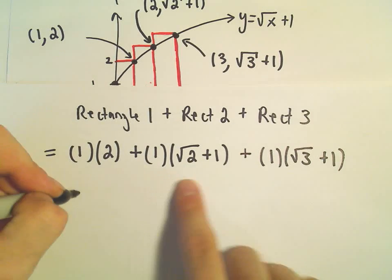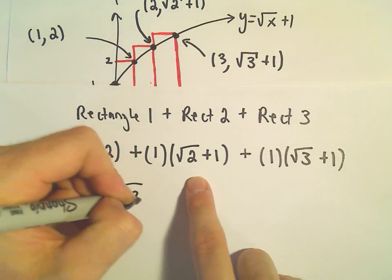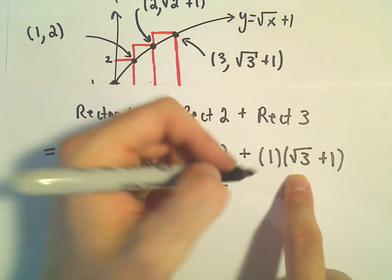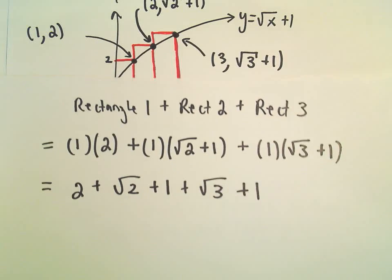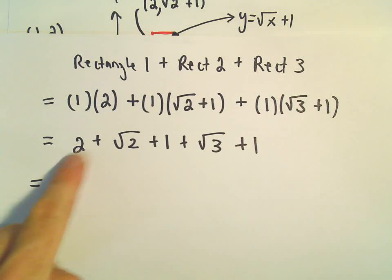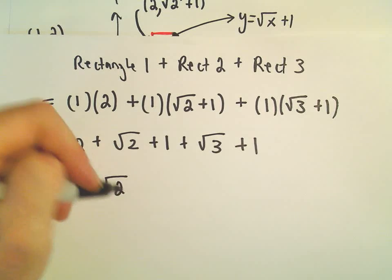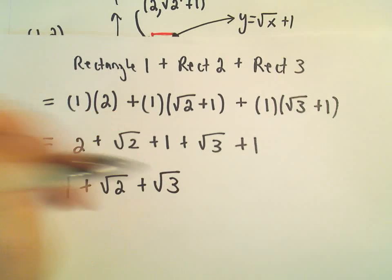So really what we have is 2 plus the square root of 2 plus 1, plus the square root of 3 plus 1. If we add these together, 2 plus 1 plus 1 would give us 4, and then we have plus the square root of 2 plus the square root of 3.